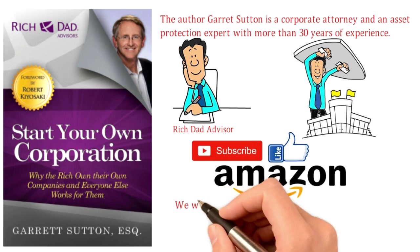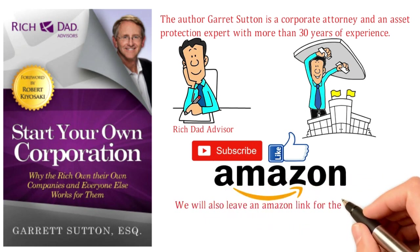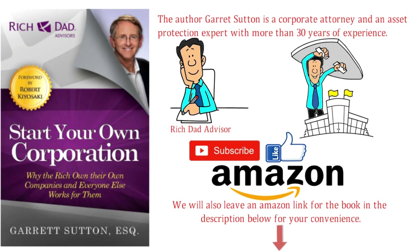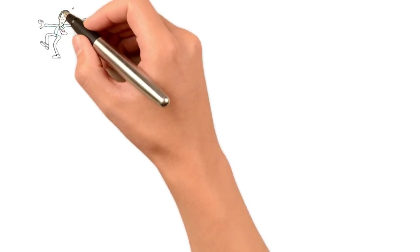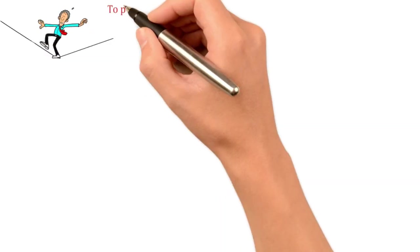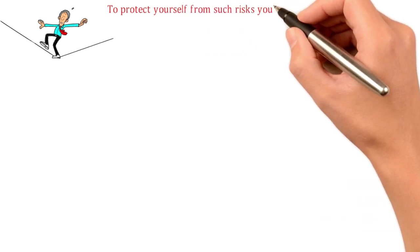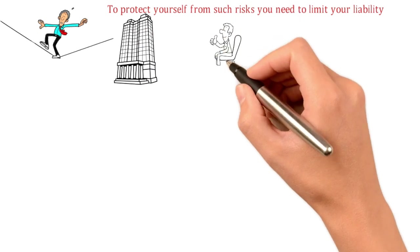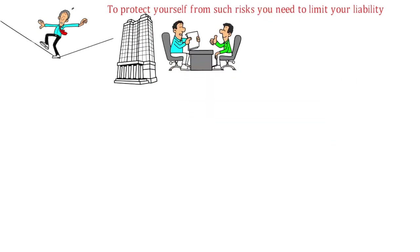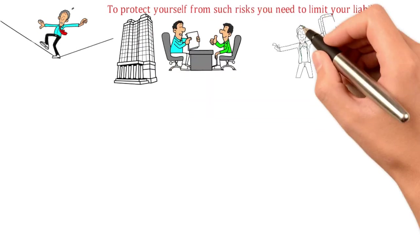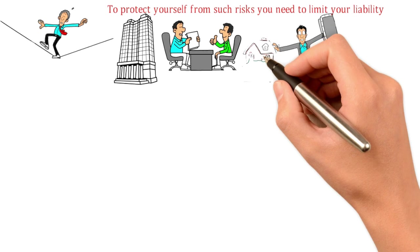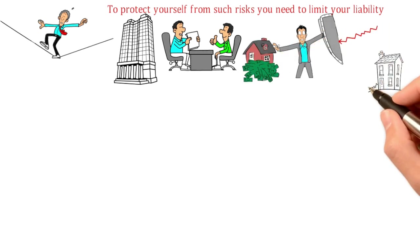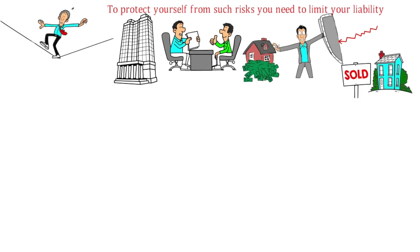We will also leave an Amazon link for the book in the description below for your convenience. In running any business there are risks known and unknown. To protect yourself from such risks you need to limit your liability by establishing a corporation or other good entity. A good entity shields and protects your personal assets from business risk; a bad entity provides you no protection whatsoever.